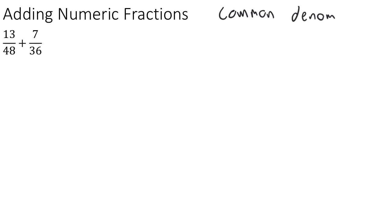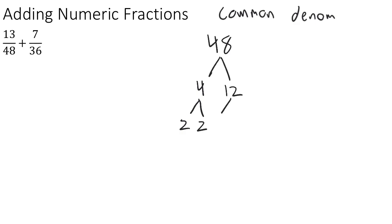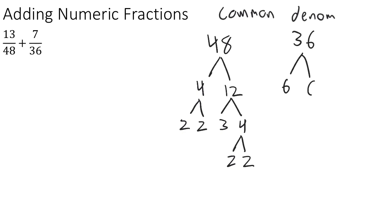So let's start with 48. We'll make our factor tree for 48. 48 is 4 times 12. 4 is 2 times 2, and 12 is 3 times 4, and 4 is again 2 times 2. Now let's do the same thing with 36. 36 is 6 times 6. 6 is 2 times 3, and the other 6 is also 2 times 3.